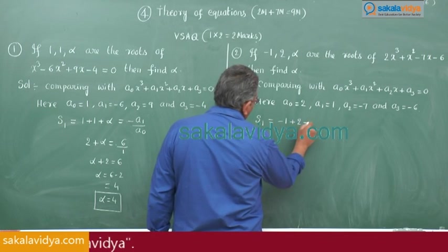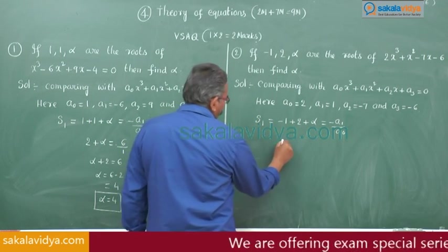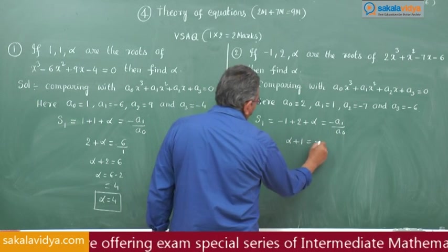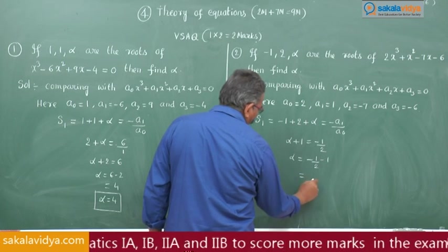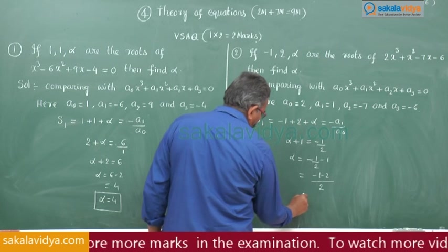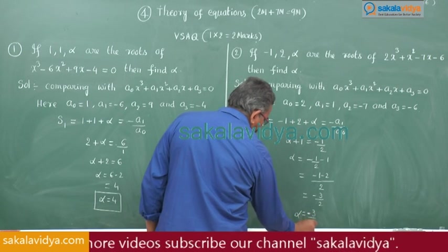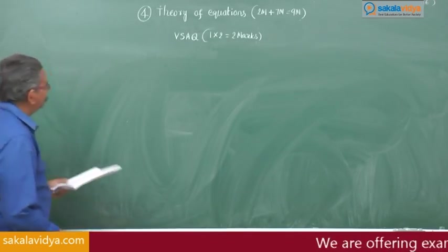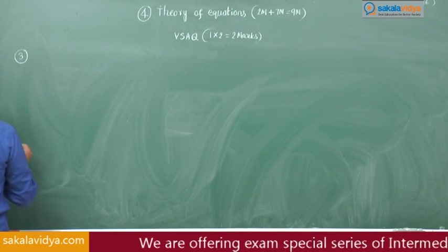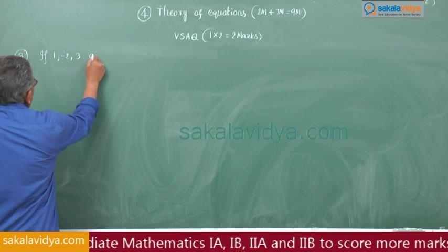Minus 1 plus 2 plus alpha equals minus A1 by A naught. So alpha plus 1 equals minus 1 by 2, therefore alpha equals minus 1 by 2 minus 1. Taking 2 as the LCM, alpha equals minus 1 minus 2 over 2, so alpha is equal to minus 3 by 2.